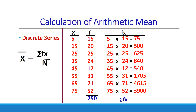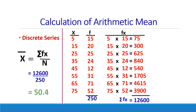Σfx equals 75 plus 300 plus 625 plus the other values, giving 12600. Applying the formula x̄ = Σfx / n, where Σfx is 12600 and n is 250, we get the arithmetic mean of the series, which is 50.4 in this case.